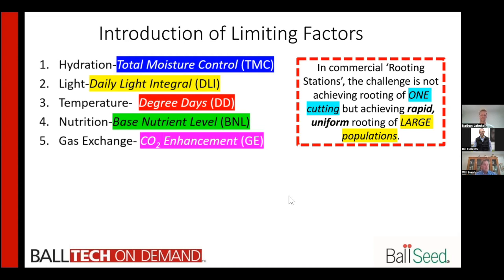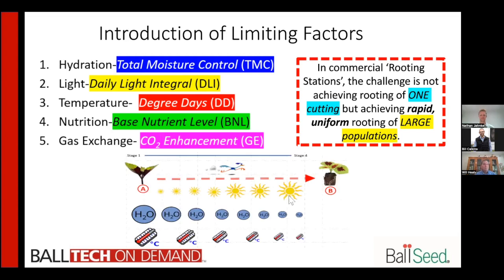We're going to touch a little bit on gas exchange. When you really break it down into an image, going from A to B — taking an unrooted cutting and turning it into a rooted cutting — if we take the top three factors, in the middle you see water: early on we want to be very wet to keep it hydrated, and then as you progress towards a rooted cutting it needs to have less moisture. Conversely, early on we want lower light intensity because high light means high temperature, which impacts the moisture in the cutting, and then as time goes on we want more light.